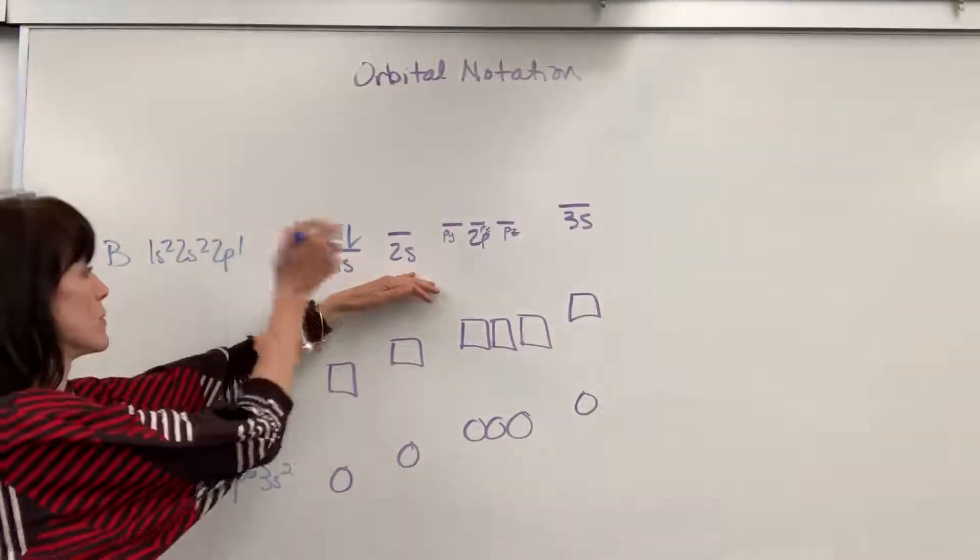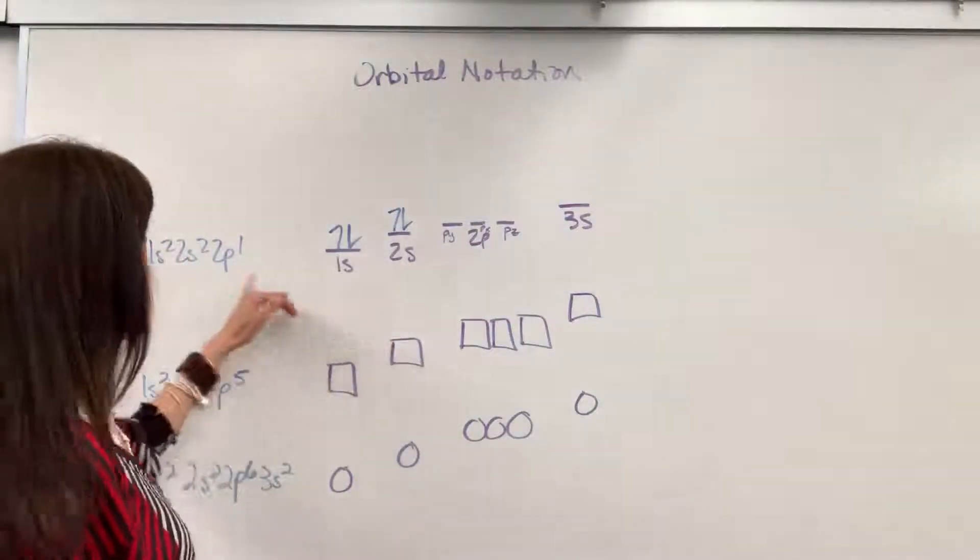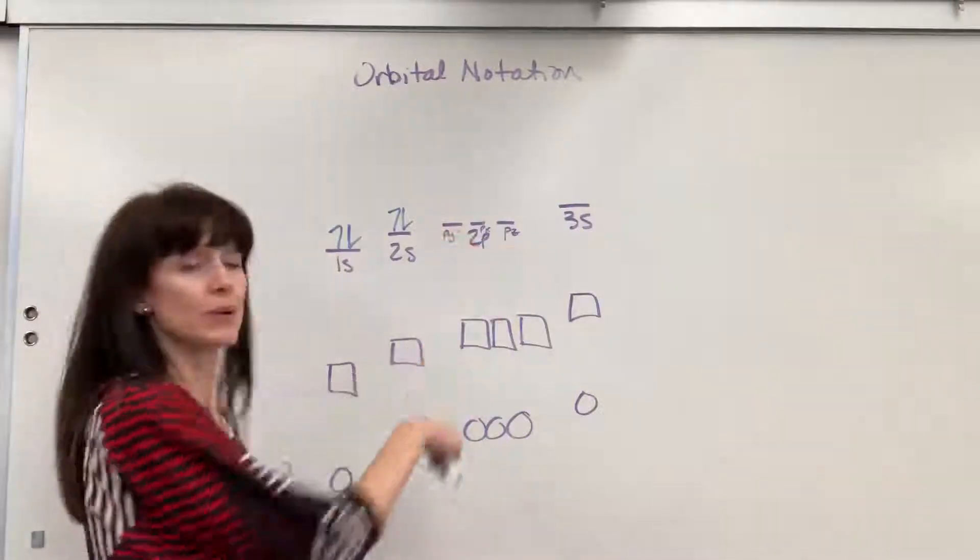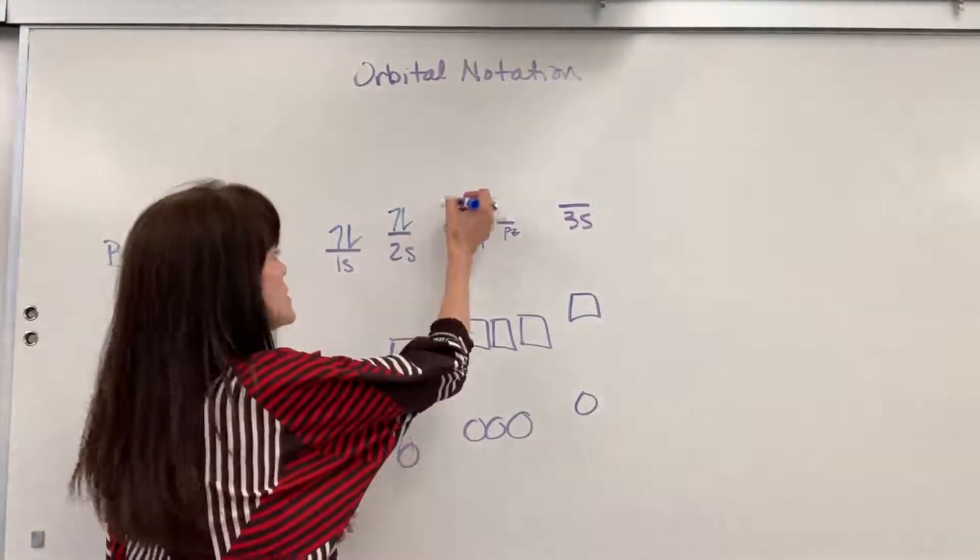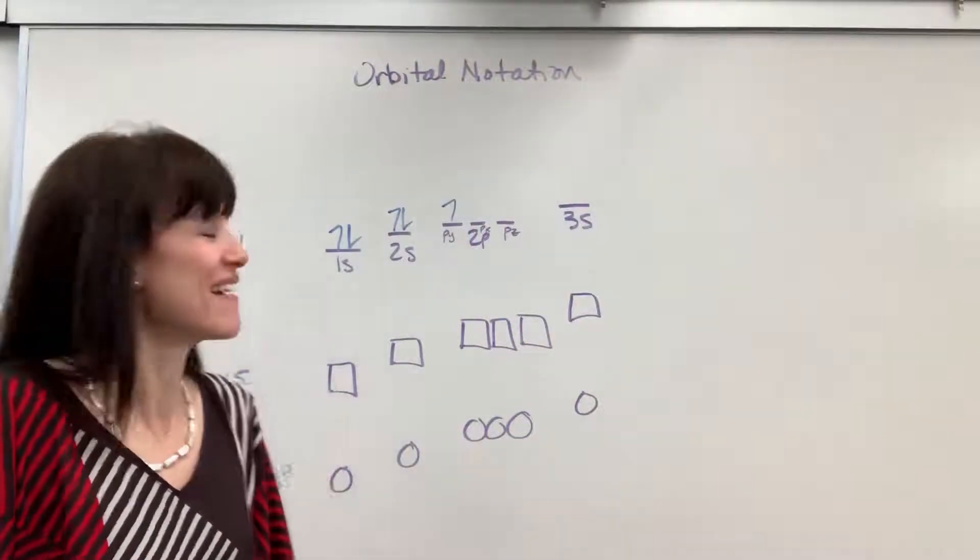Then we go to the 2s2. We have two electrons. They spin up and they spin down. Now I only have one electron in the 2p. So you can put it anywhere and it doesn't matter if you spin it up or if you spin it down. So I'm going to do an up. I just tend to always do the first one and do an up.